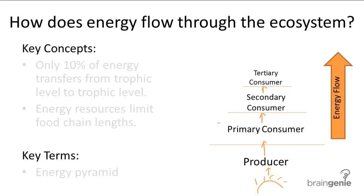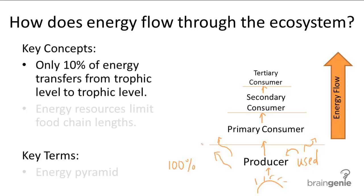It's important to know that when energy transfers from one trophic level to the next, not all 100% of the energy is transferred. Most of it isn't transferred — most of the energy is either used by the trophic level or is lost as heat. So what happens after all this energy is used or lost? Only 10% of the energy is left to transfer to the next trophic level.